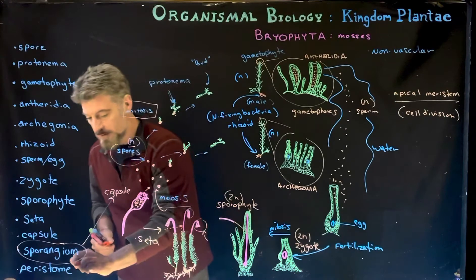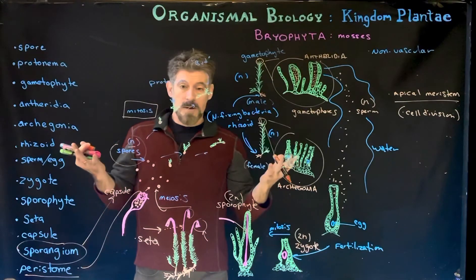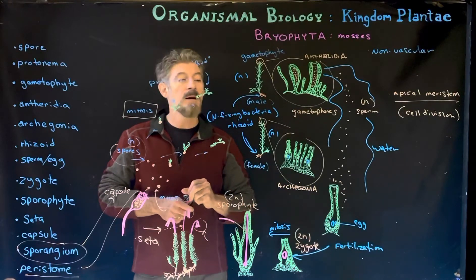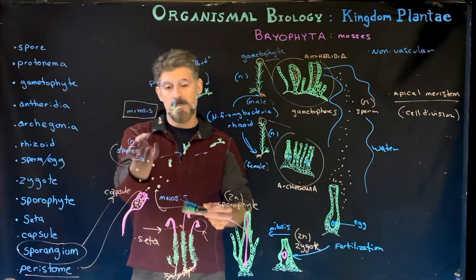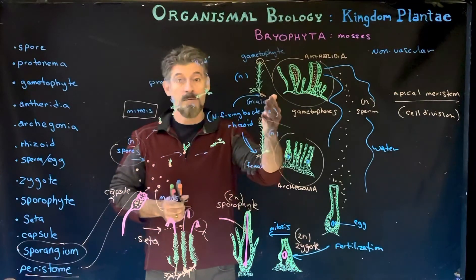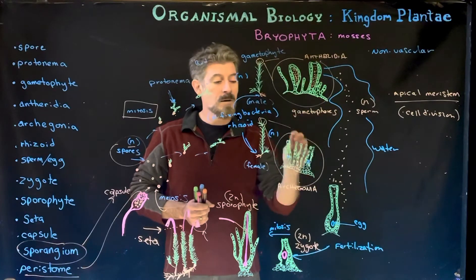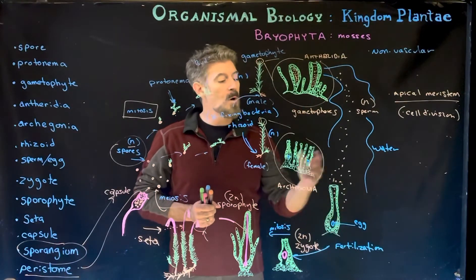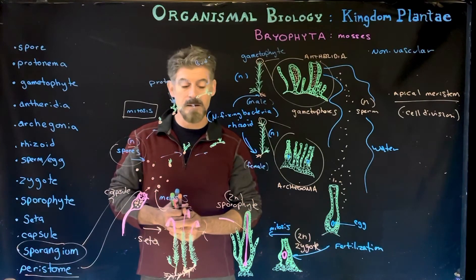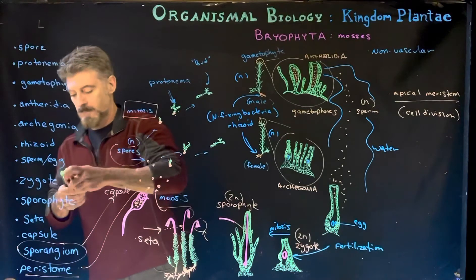The capsule opens through a structure called the peristome, and then the spores are distributed, typically by wind or water, so the organism can spread. The spores find a good site for development and mitosis begins, forming a new protonema and then a new gametophyte plant. The gametophyte produces gametes, fertilization occurs, zygotes develop into new sporophyte plants, and the cycle continues.